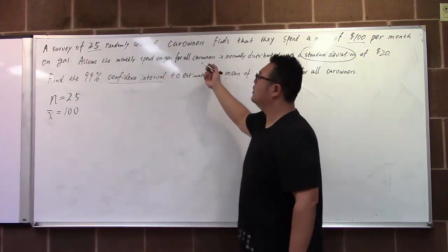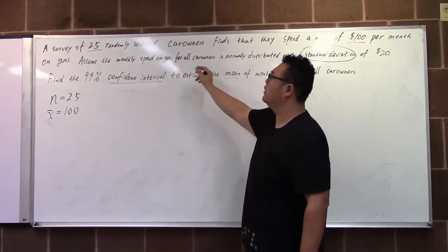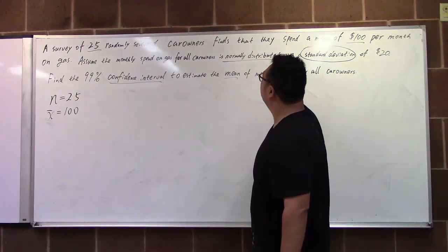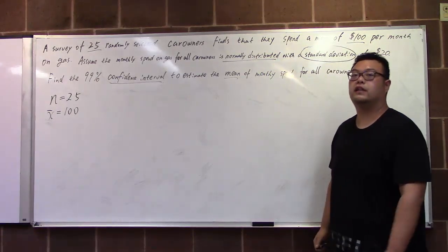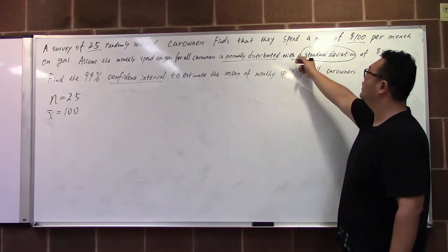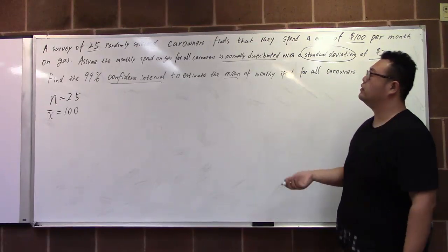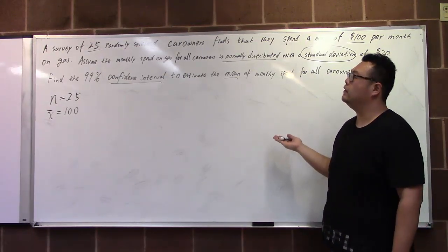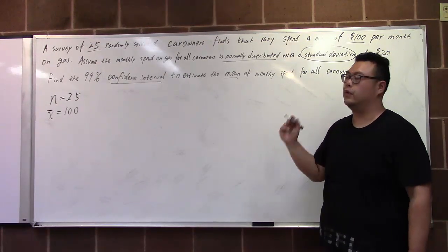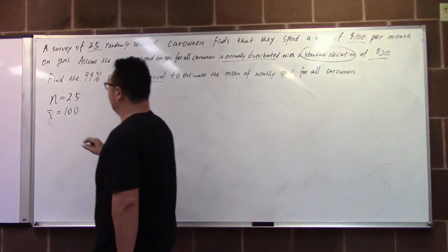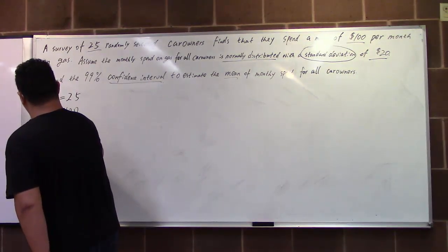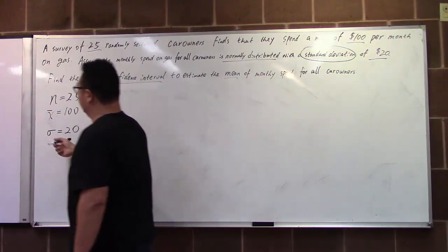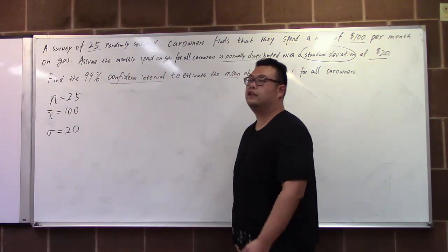And the next sentence tells us the population is normally distributed and with the standard deviation of 20, which shows us the standard deviation is from the population. This is the population standard deviation.